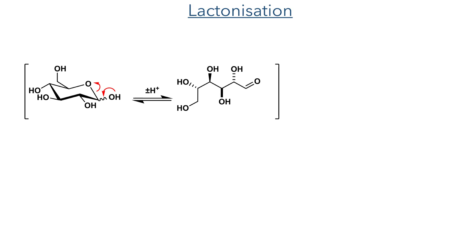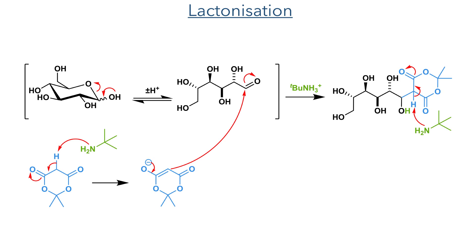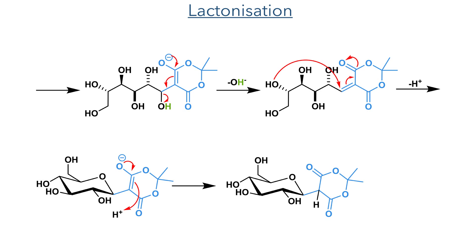The synthesis started with the reaction of glucose and Meldrum's acid. Glucose is in equilibrium between the closed chain and open chain form. It is this open chain form that is first deprotonated by tert-butylamine, forming an enolate that attacks the transient aldehyde, which is then protonated, forming the alcohol. The alpha position of Meldrum's acid is once again deprotonated by tert-butylamine, allowing for an E1CB elimination to produce an electrophilic enone. This then undergoes conjugate addition from the C5-hydroxyl group, reforming the cyclic glucose, and the enolate is reprotonated.